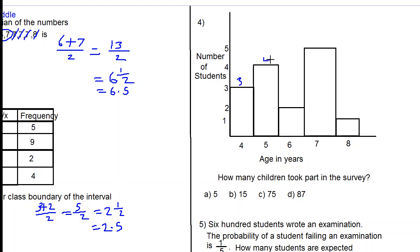This other bar means two students who are six years old took part, five students at seven years, and one student at eight years. We need to add these numbers: 3 plus 4 plus 2 plus 5 plus 1. Three plus four is seven, and two is nine, and five is 14, and one is 15.